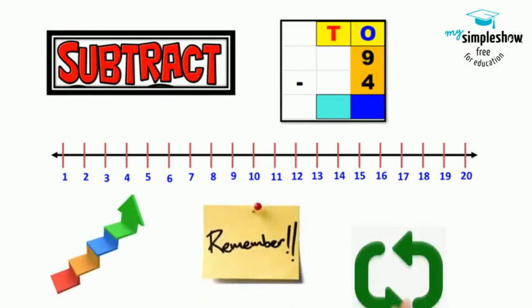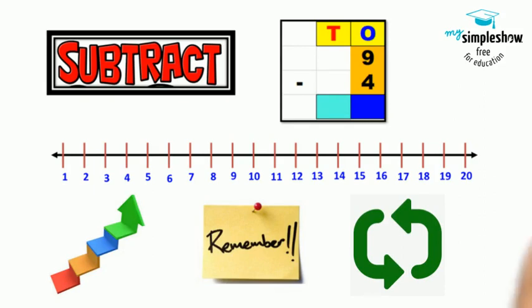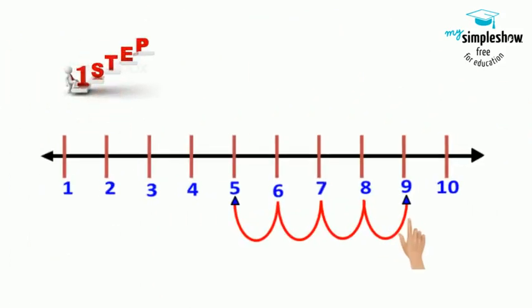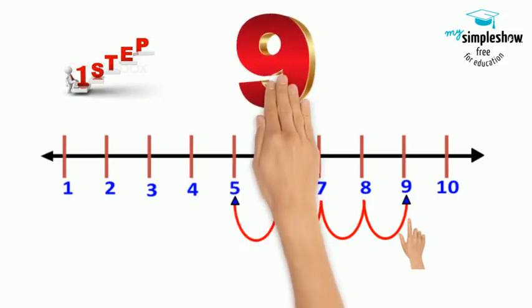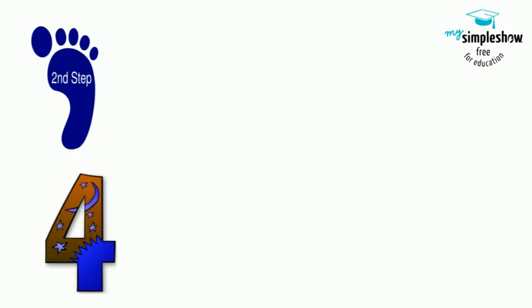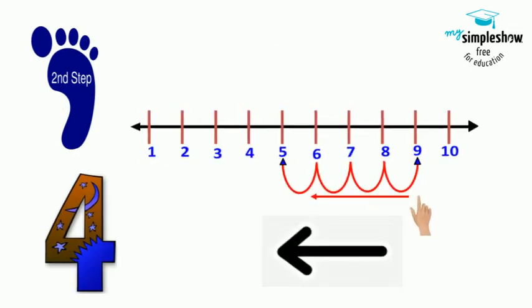Firstly, on the number line you need to put your finger on number 9. Secondly, go back by four places on the number line in this way.